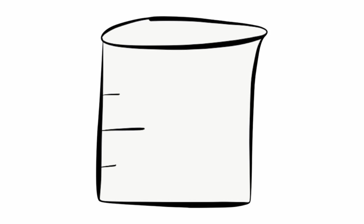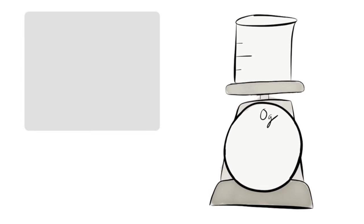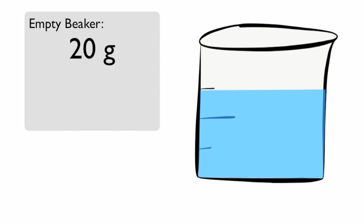To find the mass of water, you need a beaker and a scale. First, find the mass of the empty beaker. Then, fill the beaker up with your desired amount of water.